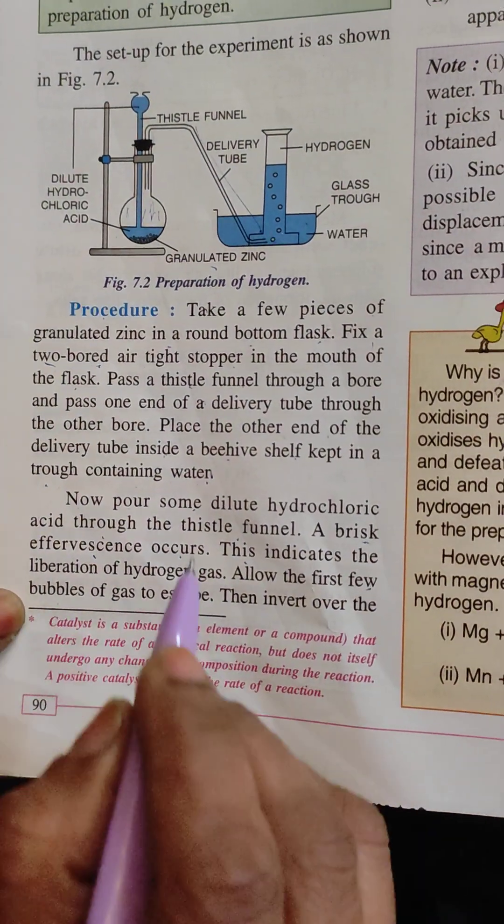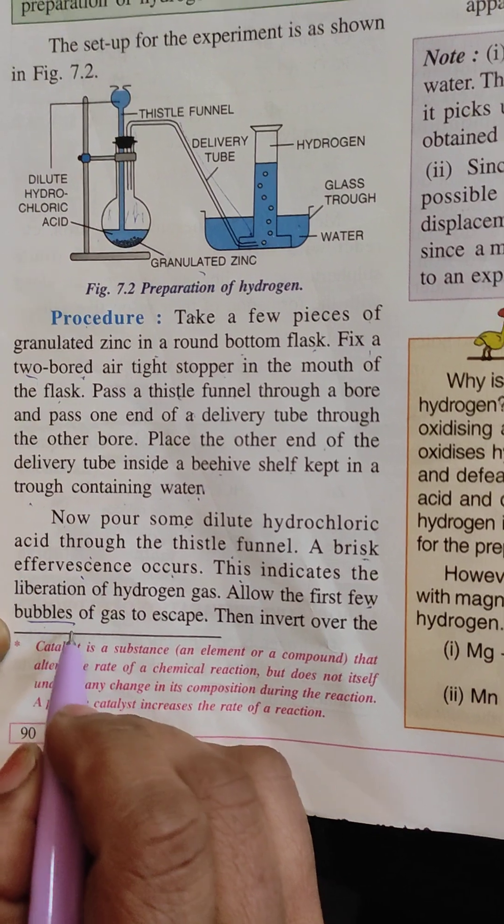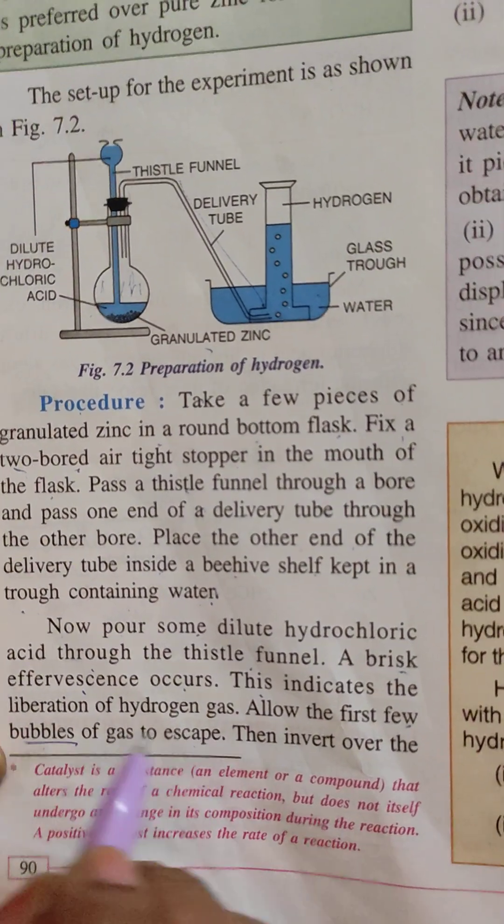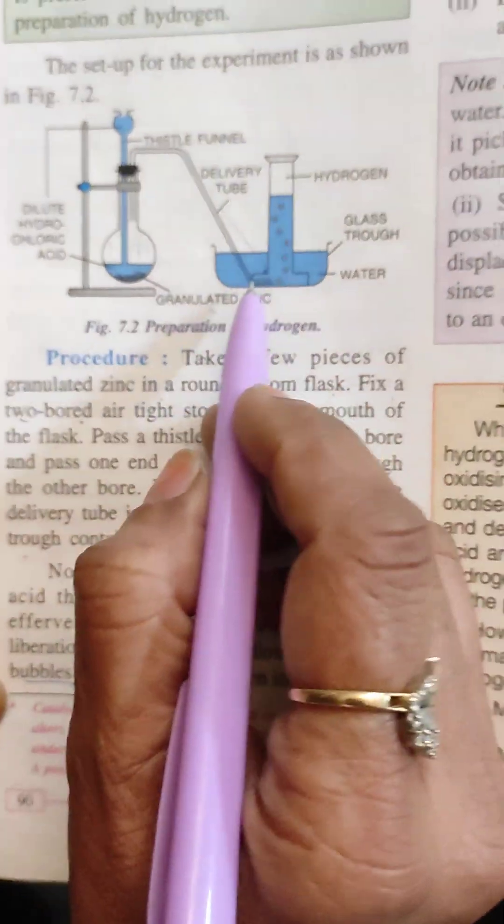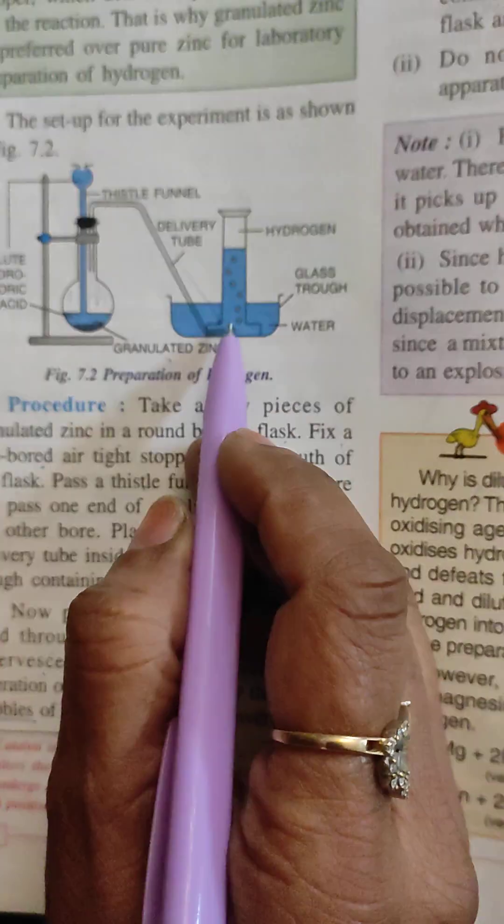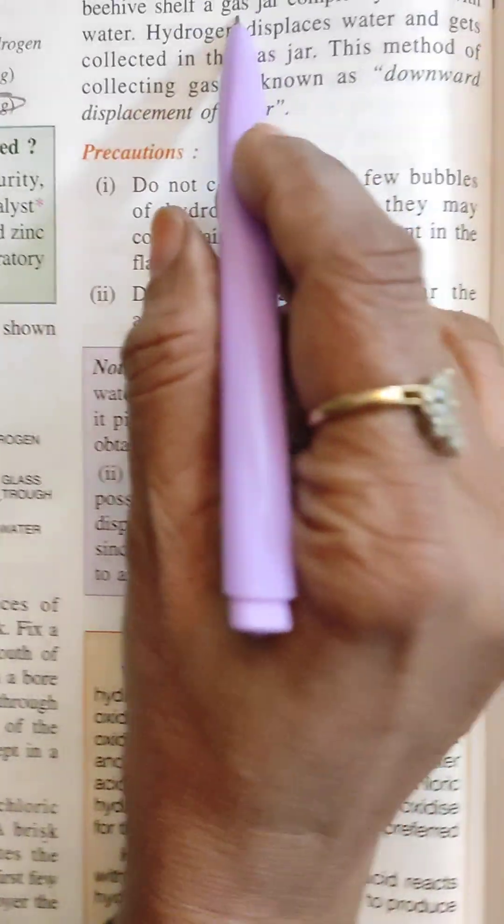Allow the first few bubbles. Effervescence bubbles are coming out. So first few bubbles of gas, allow the first few bubbles. Then invert over the beehive shelf. Allow it first, and then the beehive shelf. What do we want to do with the beehive shelf? Gas jar.